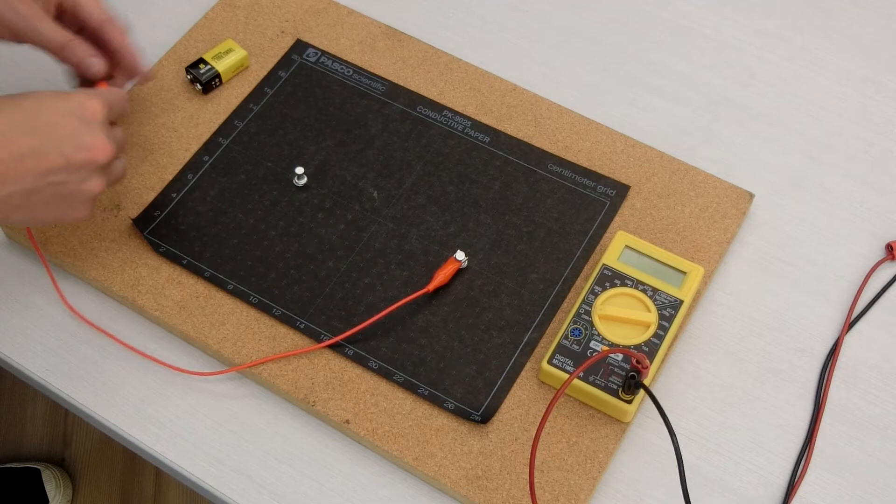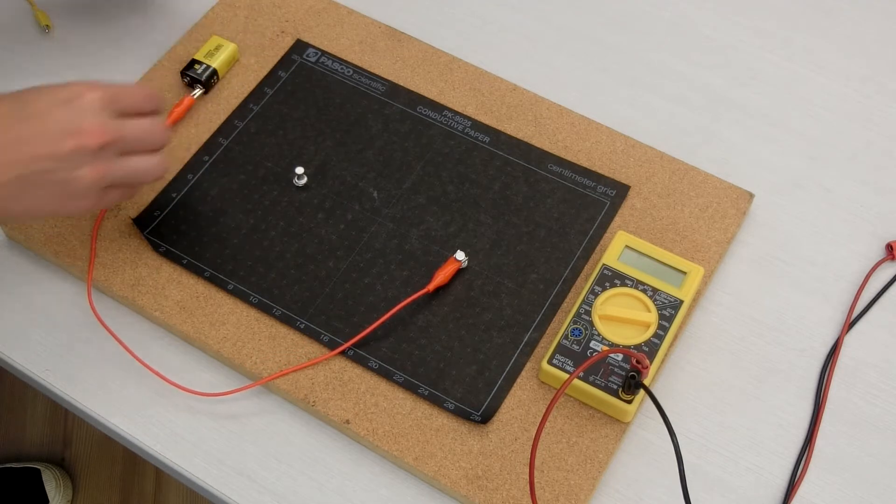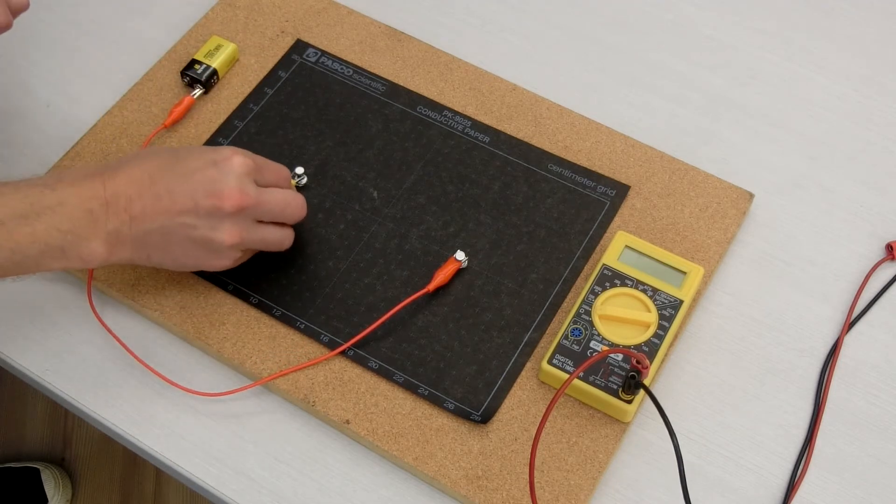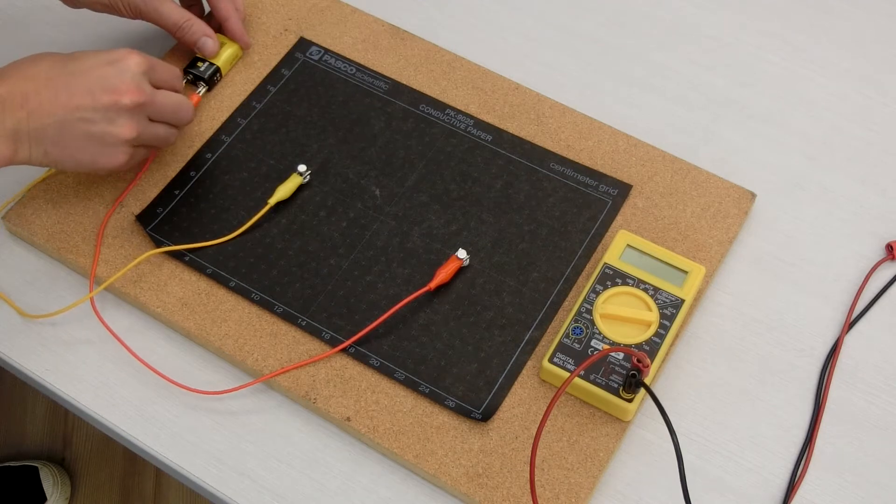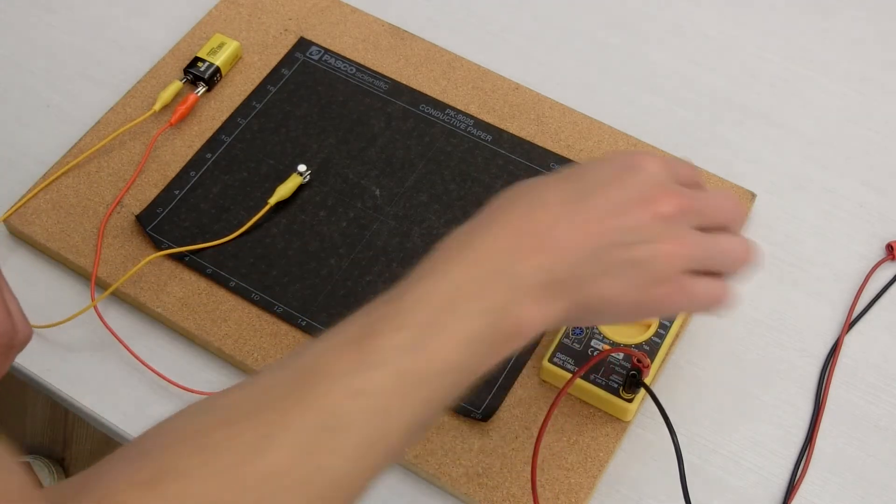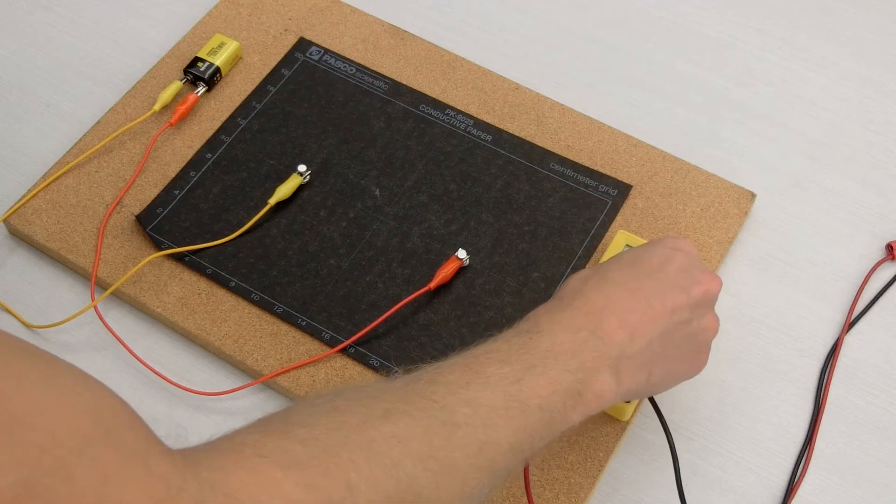However, in this experiment, the fields will be confined to this sheet of semi-conductive paper and produced by attaching a 9-volt battery to two spots of conductive paint. This creates a simulation of an electric dipole.